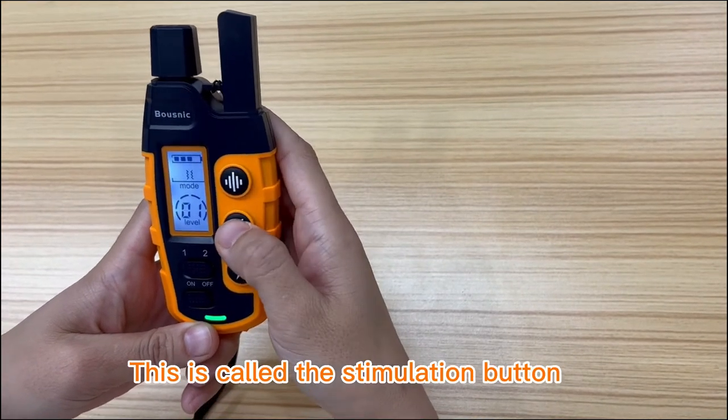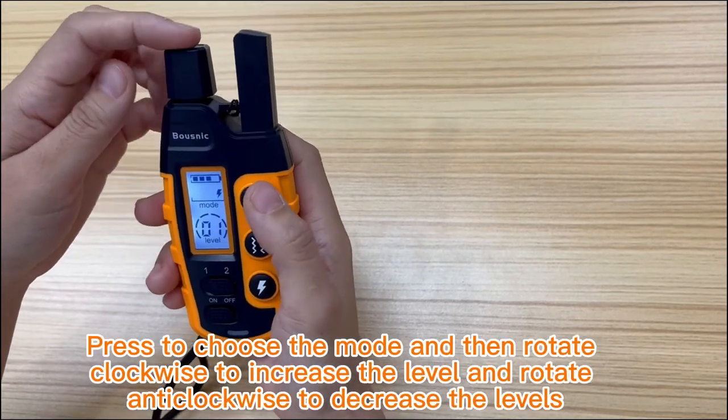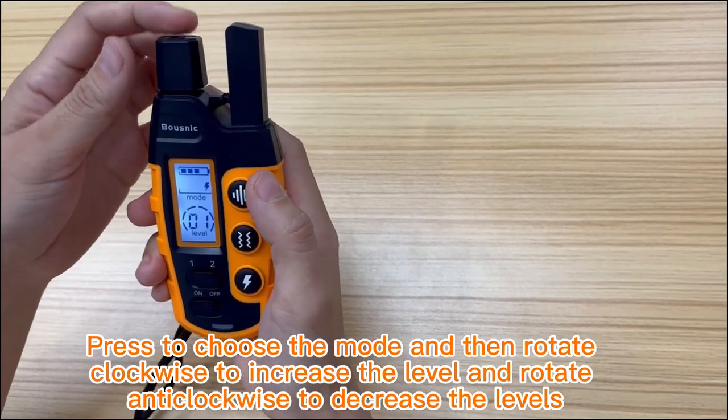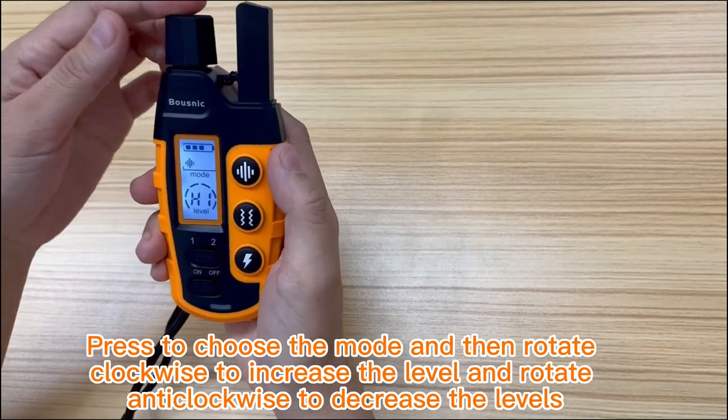This is called the stimulation button. Press to choose the mode and then rotate clockwise to increase the level and rotate anticlockwise to decrease the levels.